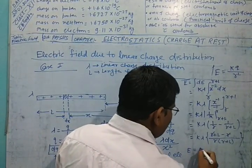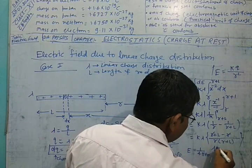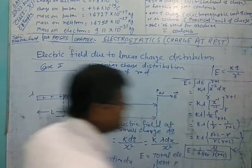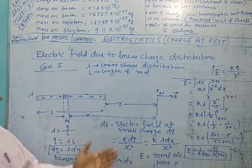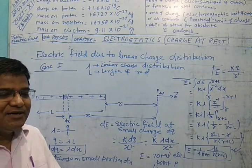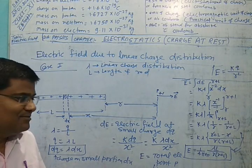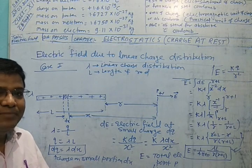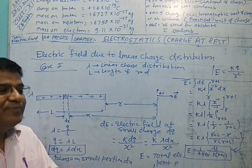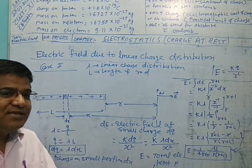The final electric field is E equals 1 over 4pi epsilon-naught times lambda L divided by R(R plus L). This is the final electric field due to the linear charge distribution. Note that this type of question is asked in examinations in different ways, so students must read the question carefully and give the answer as required by the question paper.